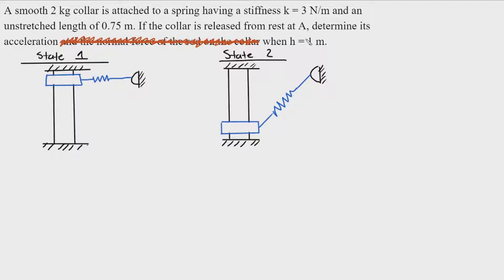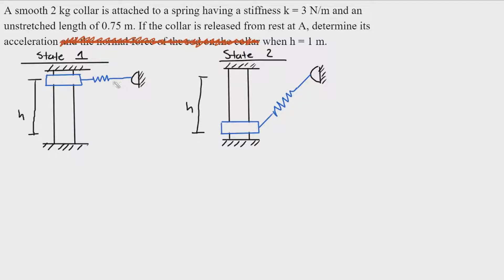The problem says that a smooth two-kilogram collar is attached to a spring having a stiffness k equals three newtons per meter and an unstretched length of 0.75 meters. The collar is released from rest at point A, and we need to determine its acceleration when h equals one. We're going to use the idea of conservation of energy to solve this problem.